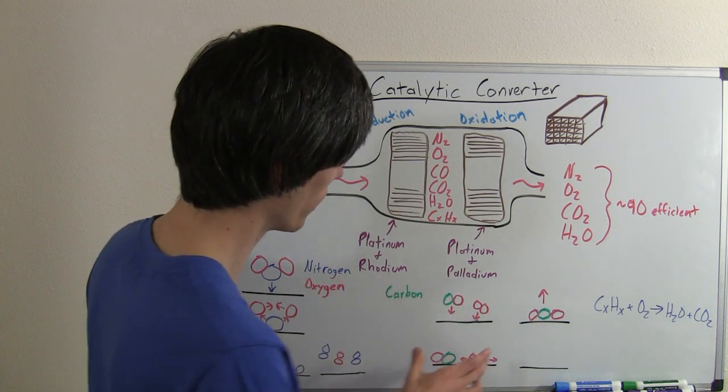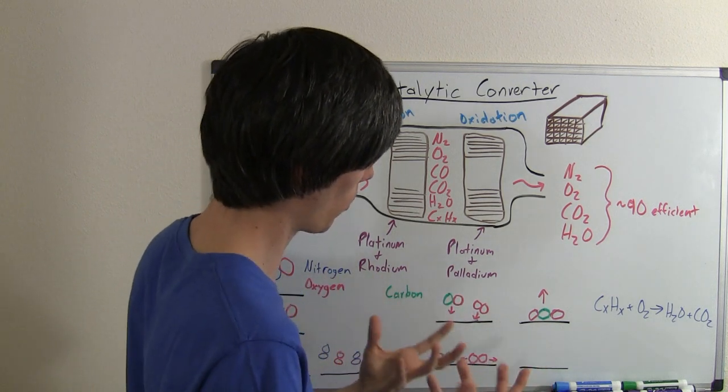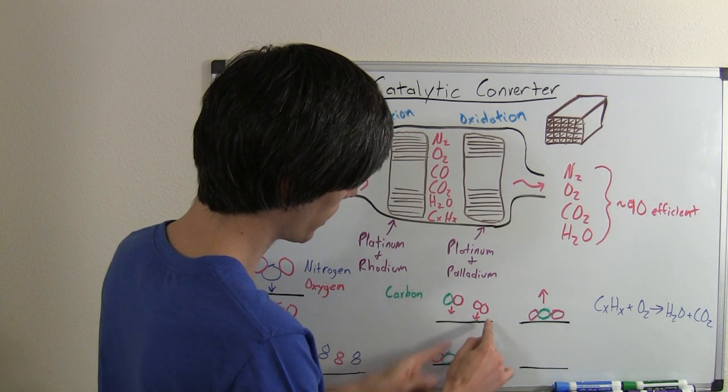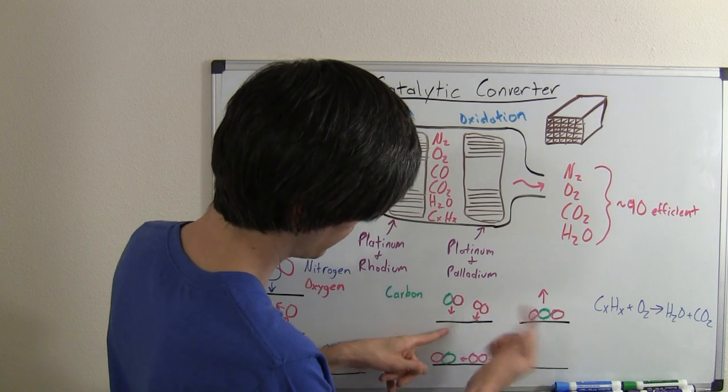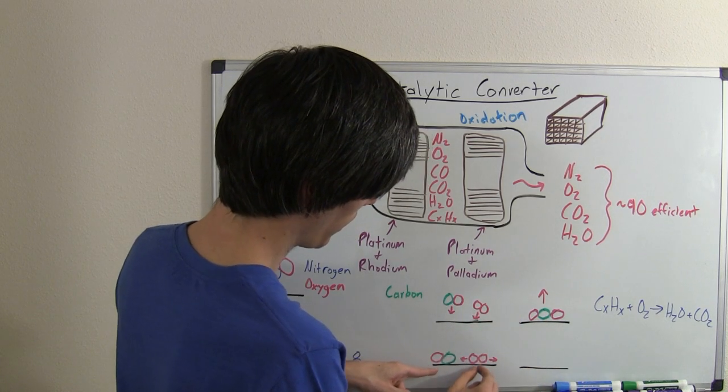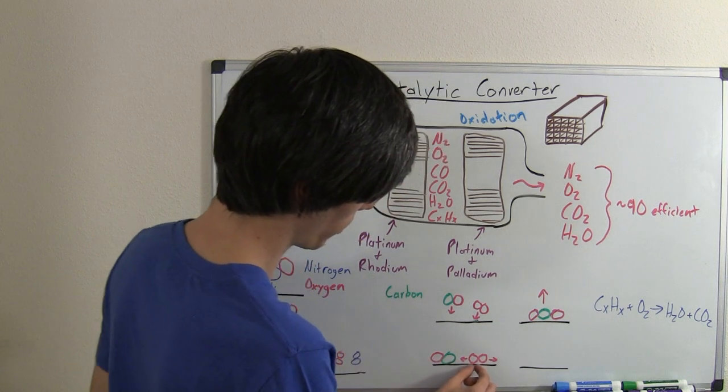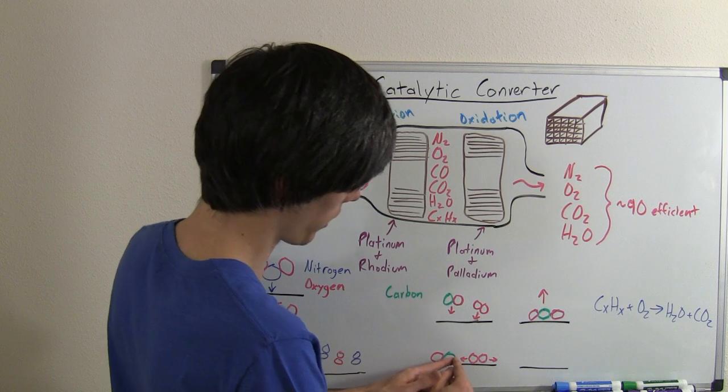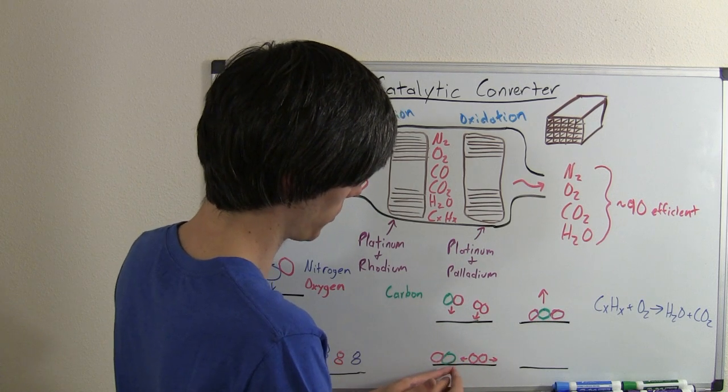So what happens in here is, the catalyst's surface wants to bond with oxygens. So what will happen is, the carbon monoxide and the oxygen molecules will come and they'll bond with the surface. Now once the oxygen molecules bond with this surface, they'll split up, and when they split up, the bond with the carbon monoxide is stronger than just by themselves.